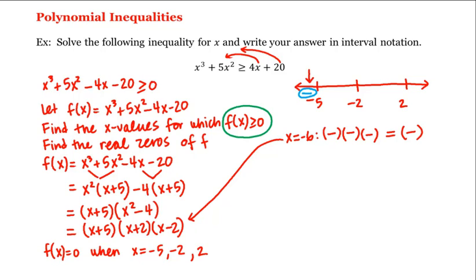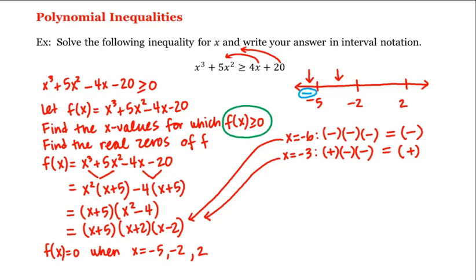For the second interval, we choose x equal to negative 3. Plugging this into the factored form, we have negative 3 plus 5, which is a positive number, times negative 3 plus 2, which is a negative number, times negative 3 minus 2, which is also a negative number. Positive times negative times negative is positive, which means f is positive in this second interval.